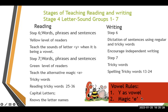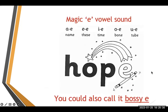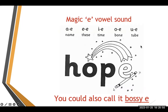The magic key concept teaches that when 'e' comes at the end of a three-letter word, it changes the short vowel sound to the long one. For example, 'hop' becomes 'hope.' Other examples include: name, chime, bone, tube.